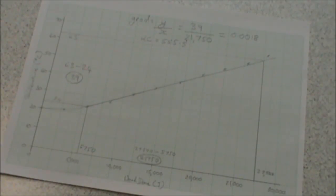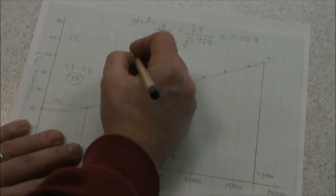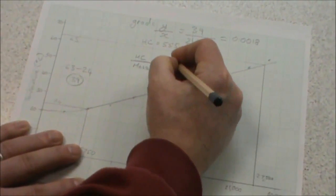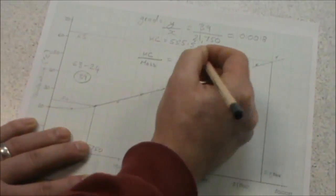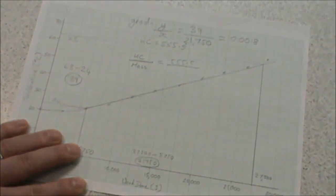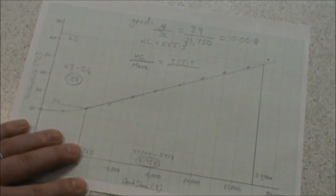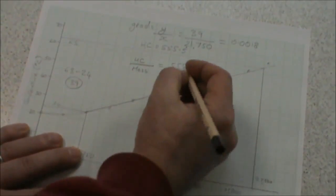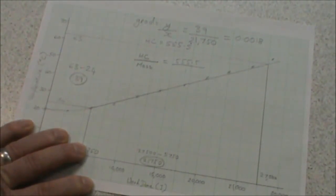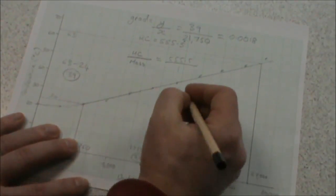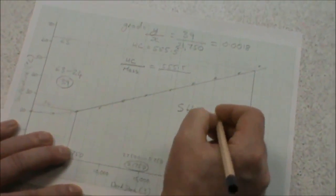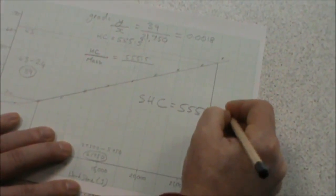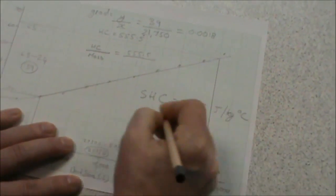To calculate the specific heat capacity for the block, we take the heat capacity and divide it by the mass of the block. So our heat capacity is 555.5. And our block was 1000 grams, which we need to convert to kilograms. To convert from grams to kilograms, we divide by 1000, which gives us a mass of 1 kilogram. 555.5 over 1 gives us a specific heat capacity of 555 joules per kilogram degrees C.